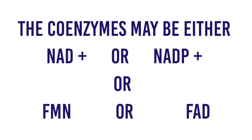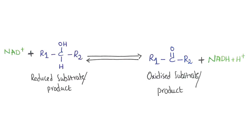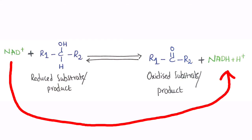The coenzymes of dehydrogenases may be nicotinamide coenzymes like NAD⁺ or NADP⁺, or flavin coenzymes. In the general reaction where NAD⁺ is required — this is a reversible reaction — the reduced substrate transfers hydrogens to NAD⁺. After accepting the hydrogens, NAD⁺ is reduced to NADH + H⁺.